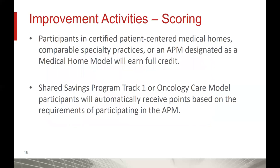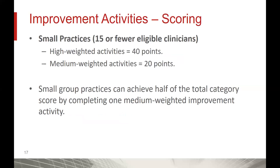If you're a participant in a certified patient-centered medical home, comparable specialty practice, or an APM designated as a medical home model, you will automatically receive full credit in this performance category. Additionally, if you are an MSSP program track one or oncology care model participant, you will automatically receive points based on the requirements of participating in that advanced payment model. For small practices, high-weighted activities are worth 40 points, so you only need to report one to get full points in this category. Medium-weighted activities are worth 20, and small group practices can achieve half of the total category score by completing just one medium-weighted improvement activity.